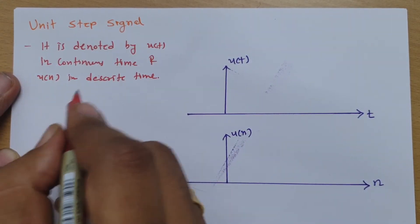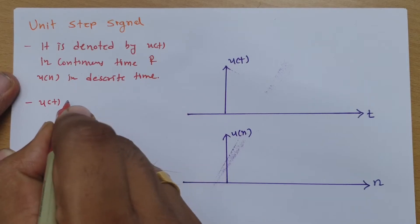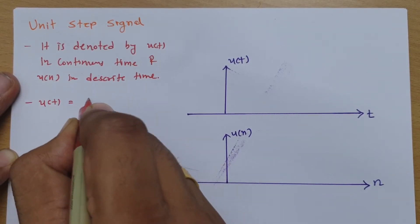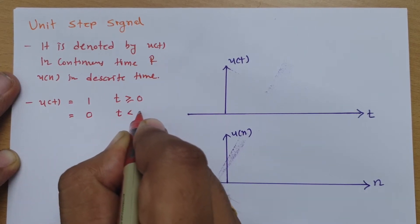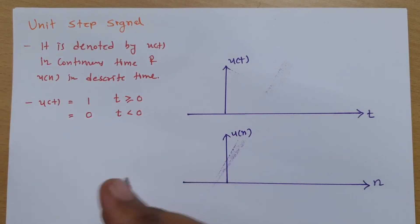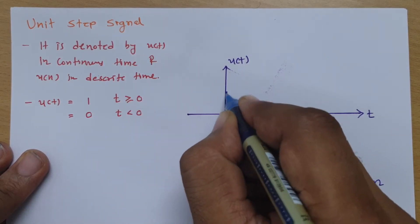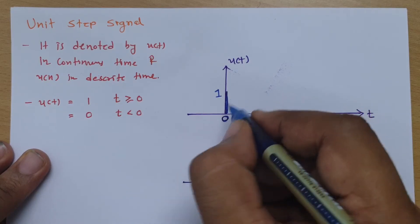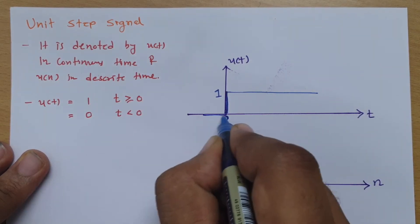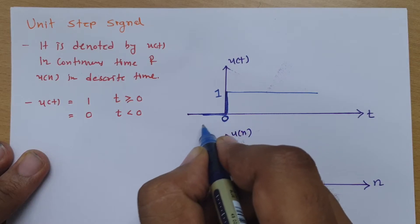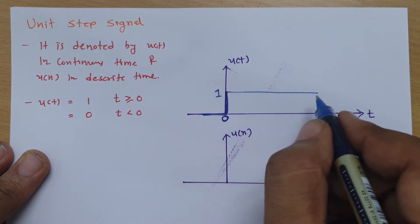Now let's look at the function definition. In continuous time, u(t) equals 1 for t greater than or equal to 0, and 0 for t less than 0. In the graphical representation, using 0 as the reference, the signal has magnitude 1 from t=0 onwards extending to infinity, and magnitude 0 for t less than 0.